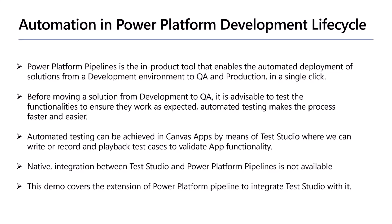As we know, when we are doing the deployment of Power Platform solutions from one environment to another, it is better to go with an automated deployment approach, which the Power Platform Pipeline in-product tool provides us. Before moving the solution, it is always advisable to complete your testing. If we are doing this testing manually, it takes time and effort, so automated testing makes our life easier.